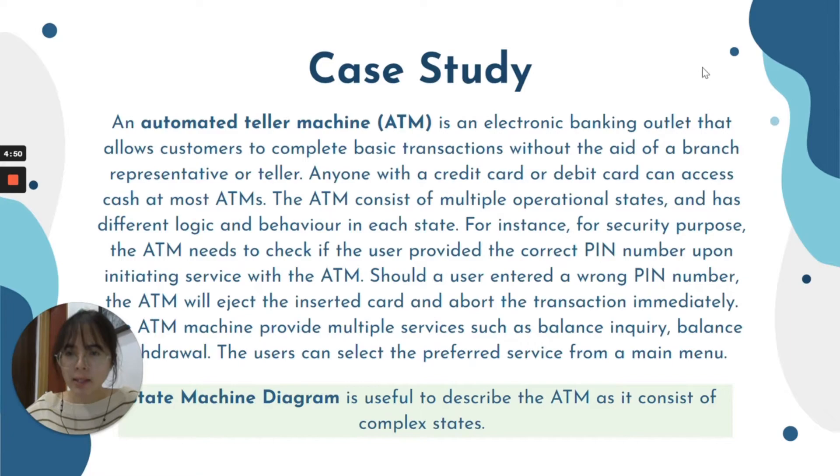Now let's move on to our use case study. Me and my teammates decided to use automated teller machine, ATM machine, in order to be our case study material. As we all know, ATM machine is a machine that allows customers to complete basic transactions without the help of a branch representative or teller. ATM machine, in order to allow us to do money withdrawal, requires a lot of procedure, such as you have to enter your bank card, you have to enter your PIN number, and you have to click this button, click that button in order to get your money. We can say that ATM actually consists of multiple operational states and have different logics and behavior in each state. This is why we decided to use ATM in order to fulfill the requirement of state machine diagram that can display something that have complex states.